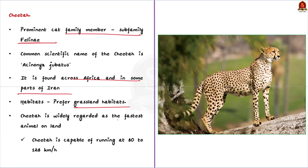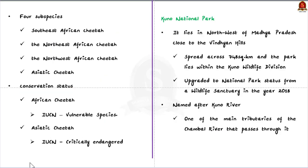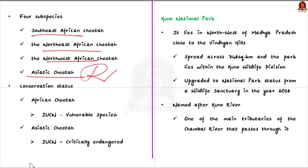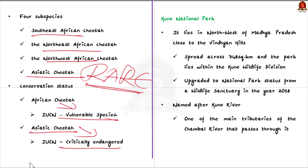Widely regarded as the fastest animal on land, cheetahs are subdivided into four subspecies: Southeast African cheetah, Northeast African cheetah, Northwest African cheetah, and the rare Asiatic cheetah. Regarding conservation status, African cheetahs are listed as a vulnerable species in the IUCN list, whereas Asiatic cheetahs are classified as critically endangered in the IUCN Red List. Both Asiatic and African cheetahs are listed in Appendix I of the CITES list.